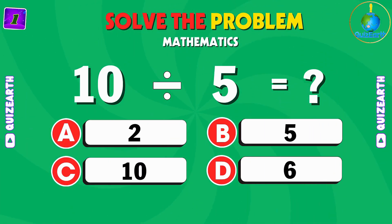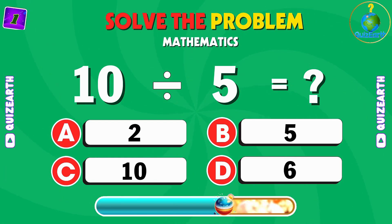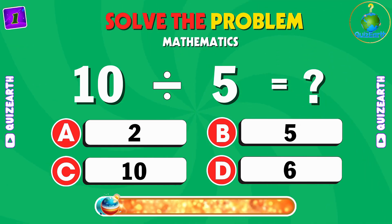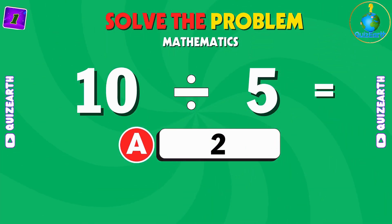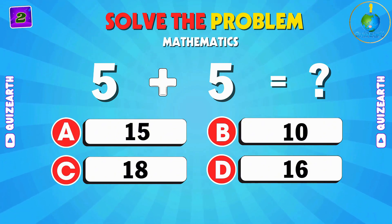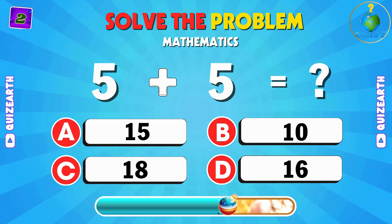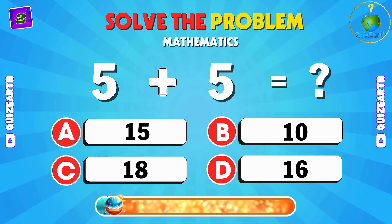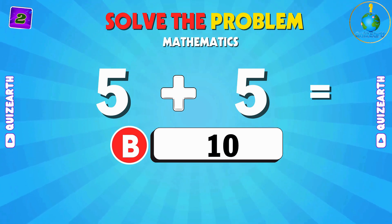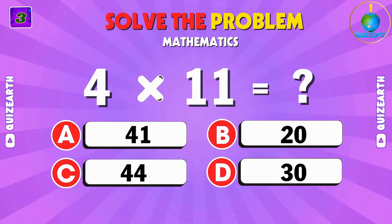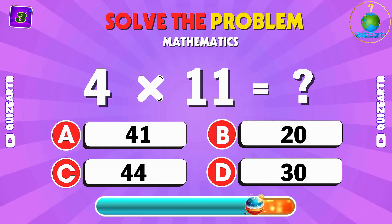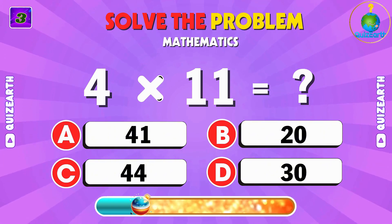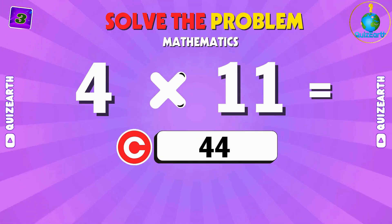Let's start with a simple division: 10 divided by 5. Can you crack it? A: 2. Adding 5 plus 5 — what's the answer? B: 10. Multiply 4 by 11 — you got this. C: 44.